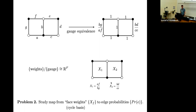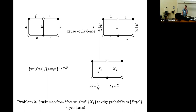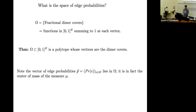The problem — open problem two — is really a research problem: study the map from the face weights, in this case for a planar graph, to the edge probabilities in the random dimer model, which is related to those weights. Associated to this set of seven weights, or the set of two face weights, is a two-dimensional space of probability measures. So there's a map from the face weights to the probability measures. What's the dimension of this space of edge probabilities? It turns out it's also the dimension of the cycle space.